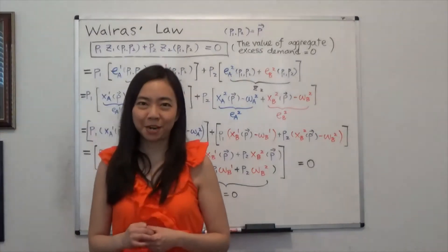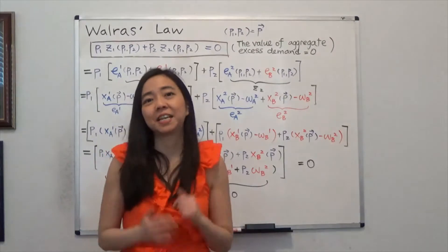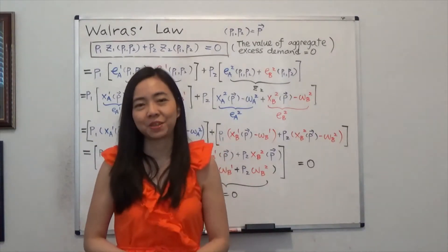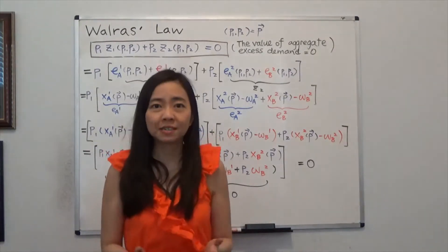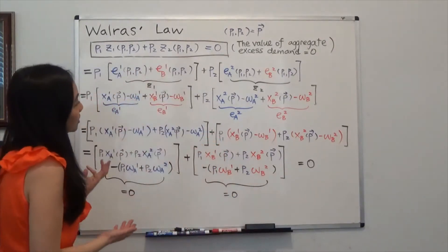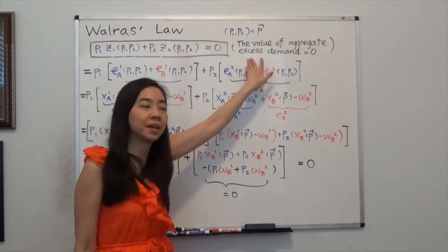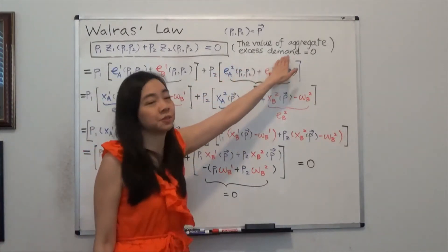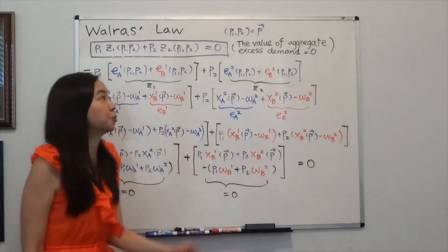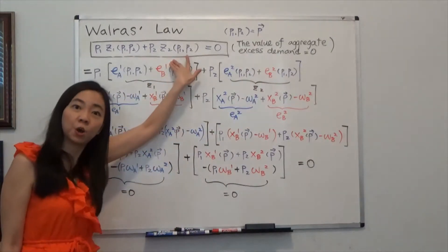Hello everyone, my name is Iris Franz with Johnny Waring. Today we are going to talk about Walras's Law. Walras's Law using plain English is this: the value of aggregate excess demand is equal to zero. And today we are going to prove that this equation holds.